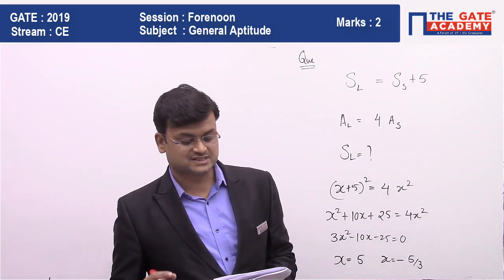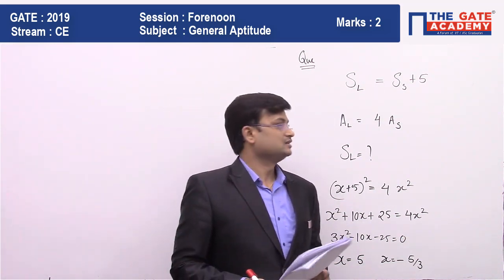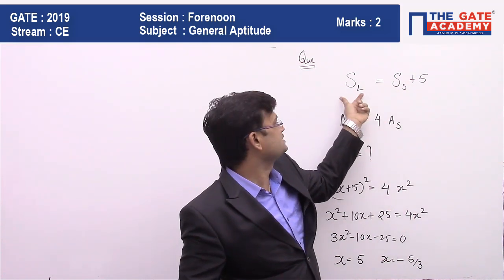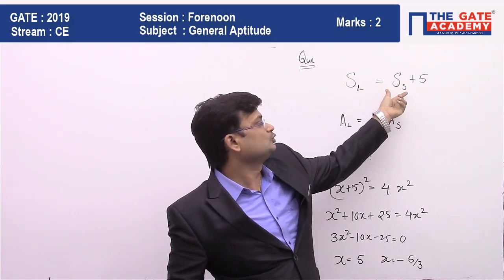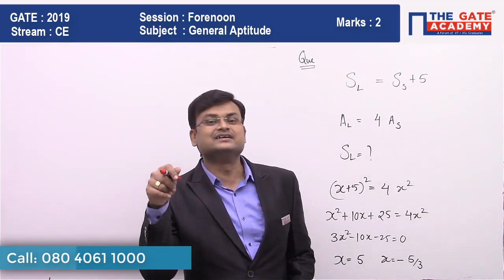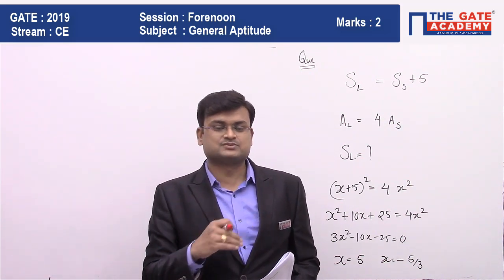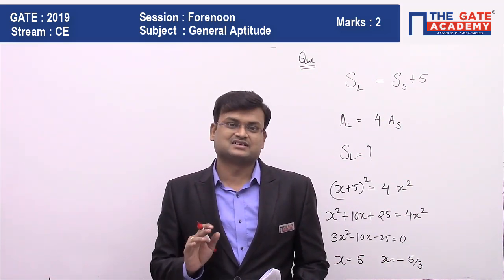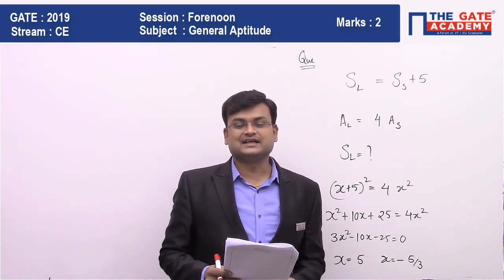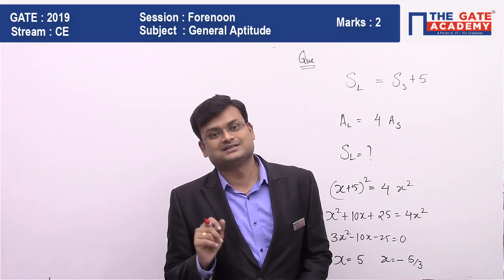The question is: the size of a square is five centimeters smaller than the second square. Let's assume a larger square and a smaller square, so the larger square's side will equal the smaller side plus five. The next data given is that the area of the larger square is four times the area of the smaller square, and they are asking for the side of the larger square.